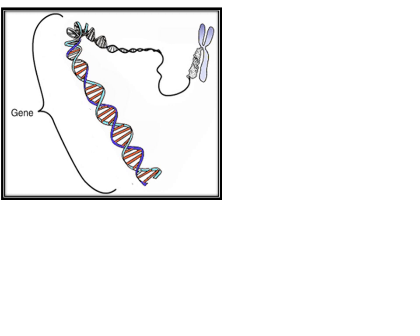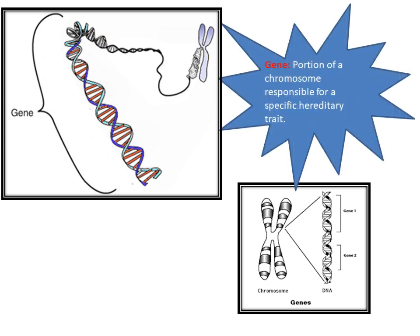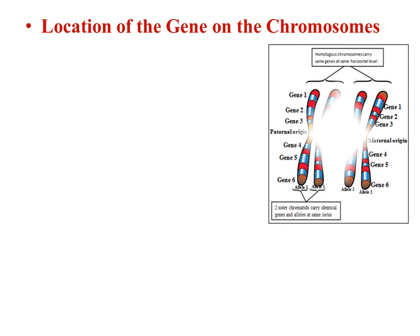Look at this picture — genes are arranged in a linear manner and occupy a determined place on each chromosome. The gene is a portion of a chromosome responsible for a specific hereditary trait. The genes are arranged in a linear manner and occupy a determined place on each chromosome to form a genetic map.